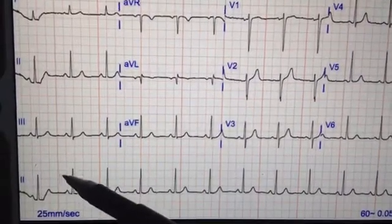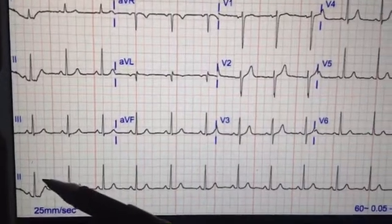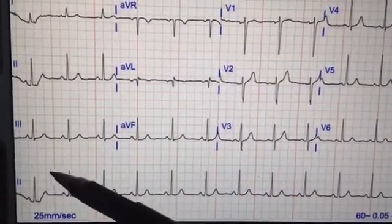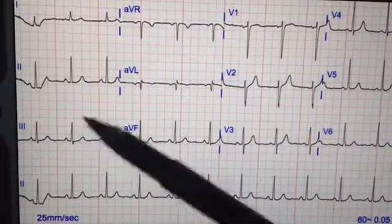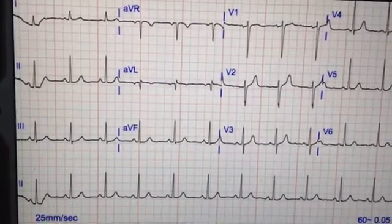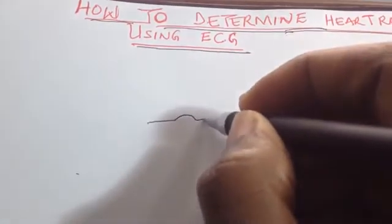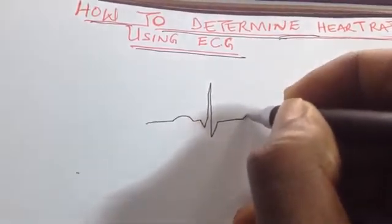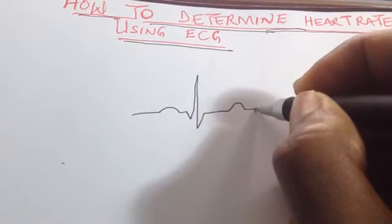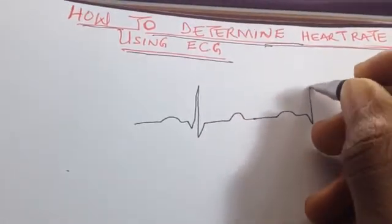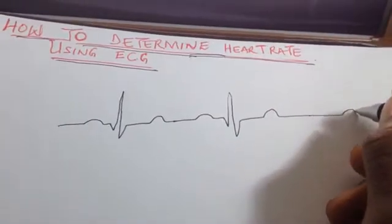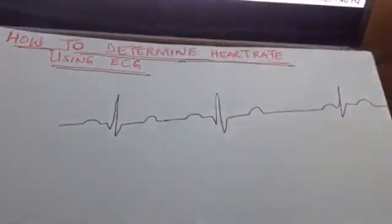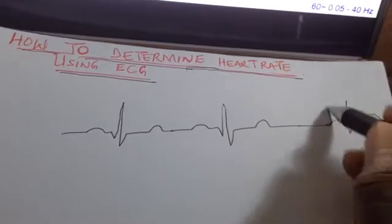To determine the heart rate in a patient's ECG, you first have to determine whether the heart rate or pulse rate is regular or irregular. For example, this is the P wave, Q wave, R wave, and T wave. I'm drawing a regular example — it cannot be perfect, just bear with me.